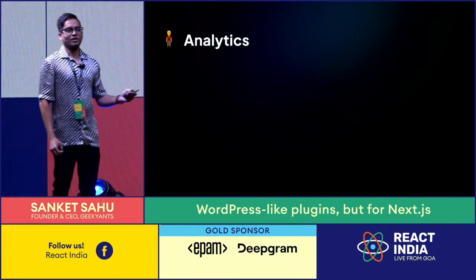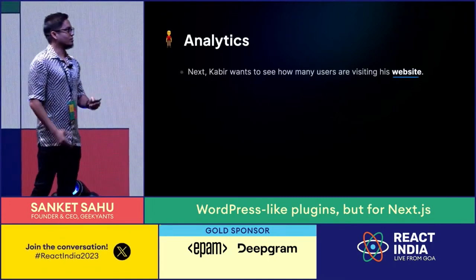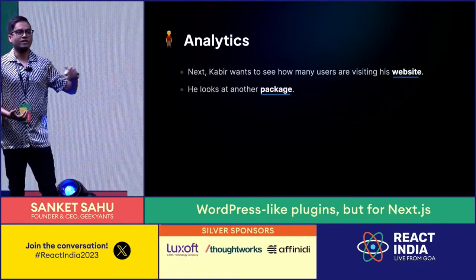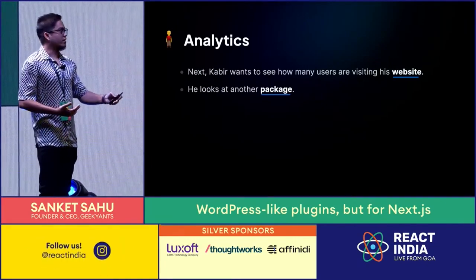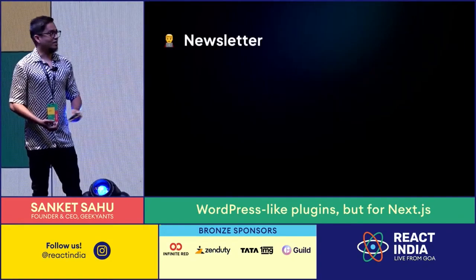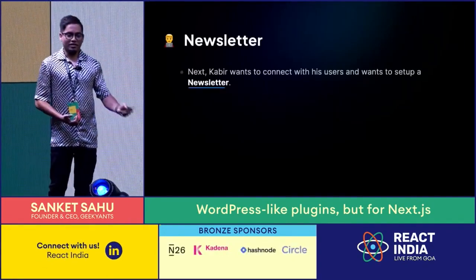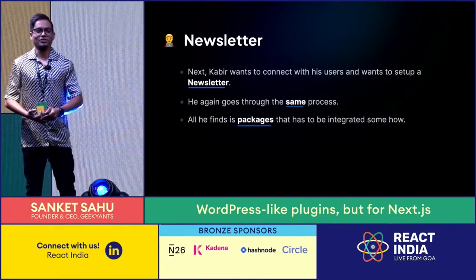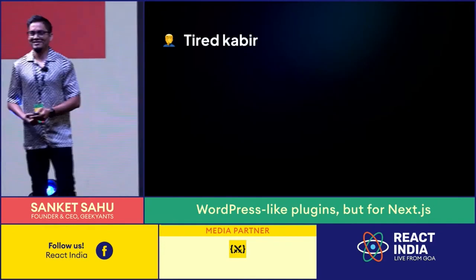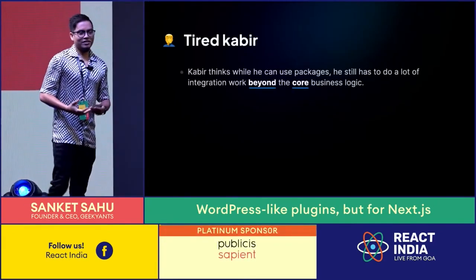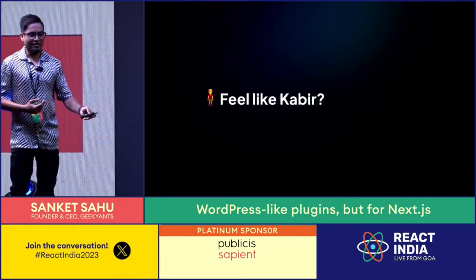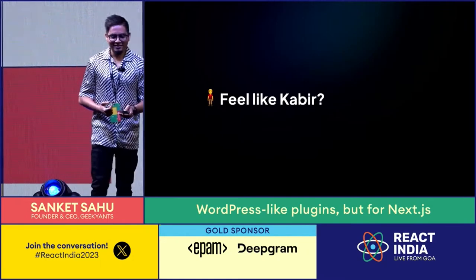Kabir also wants to include analytics — for example, Google Analytics. So he goes and looks at packages, adds them through NPM, and then manually puts them into the provider, the API route, middleware, and different places. Kabir repeats the same steps over and over again — not just for analytics, but when he wants to add a newsletter feature, he does the same thing again and again: install a package, use it, and integrate it all by yourself. Kabir realizes that while he can bring in packages, he has to do a lot of integration work beyond them.